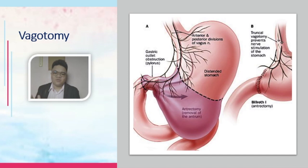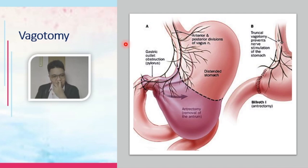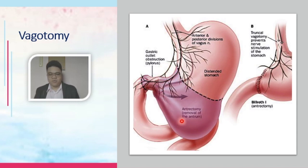Vagotomy involves the vagus nerve, which innervates our stomach and triggers parasympathetic nervous system responses. In vagotomy, we are cutting the nerve that triggers the stomach to produce acid. We have truncal vagotomy, intended to prevent stimulation of the nerve that causes the stomach to produce acid. Antrectomy involves removal of the antrum of the stomach, which is then combined with the duodenum. You will encounter the terms Billroth-1 and Billroth-2 — Billroth-1 is a gastroduodenostomy, combining part of the stomach with the duodenum.